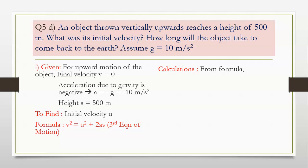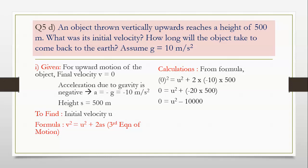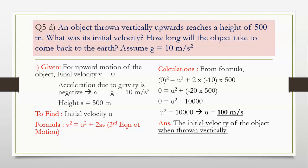Substitute the values in the formula: v square is equal to u square plus 2as. So, 0 squared is equal to u square plus 2 into minus 10 into 500, giving 0 is equal to u square minus 10,000. Therefore u square becomes 10,000. Taking square root gives u equal to 100 meter per second. The initial velocity of the object when thrown vertically upwards is 100 meter per second.